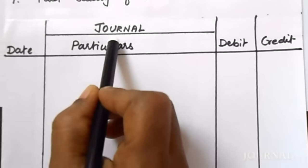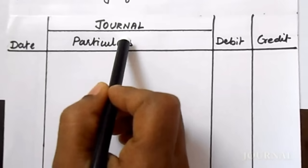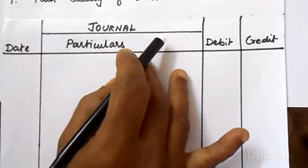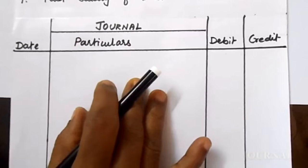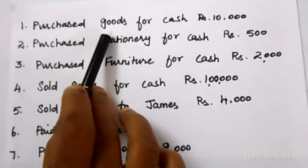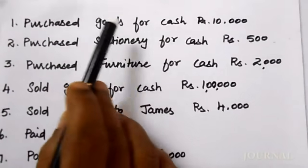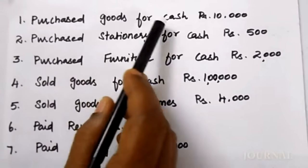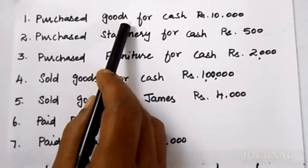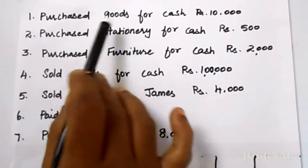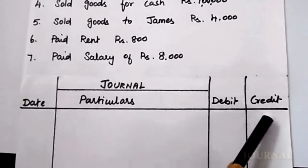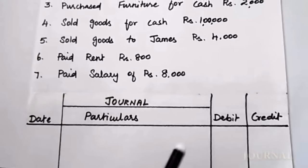In this video I am going to explain journal. Journal is a book of primary entry or original entry. All transactions are initially recorded in the journal. For any transaction, you need to have a thorough knowledge about debit and credit. Then only you can make entries in the journal book.